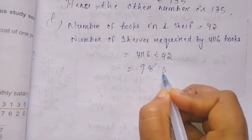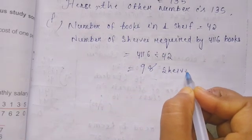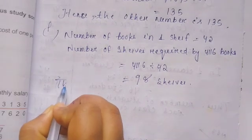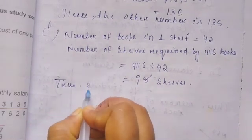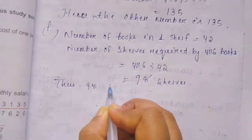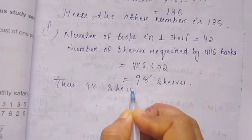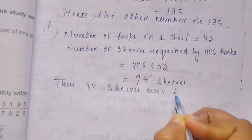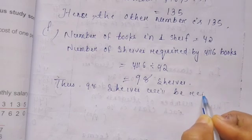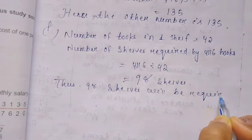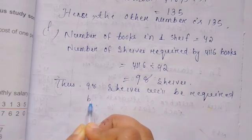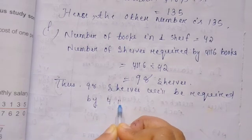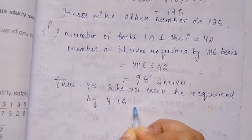42 times 8: 8 times 2 is 16, carry 1; 8 times 4 is 32 plus 1 equals 33. 42 times 8 is 336. 336 minus 336 equals 0. The answer is 98. Thus 98 shelves will be required by 4,116 books.